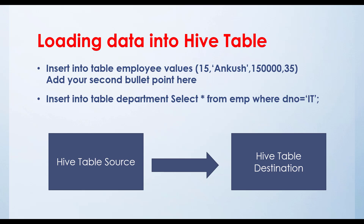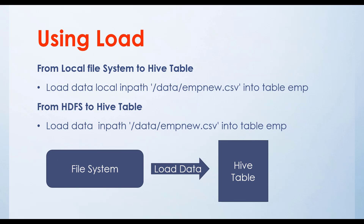The second method is by using the LOAD command — loading from the local file system to a Hive table. If your file is available in the local file system and you want to load it directly into a Hive table, the command is: LOAD DATA LOCAL INPATH '/path/to/file' INTO TABLE emp. The keyword LOCAL means it will pick up the file from your local path and load the data into the Hive table named EMP. Use this command only when your file is available locally.